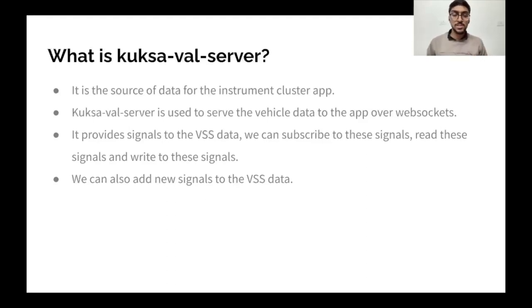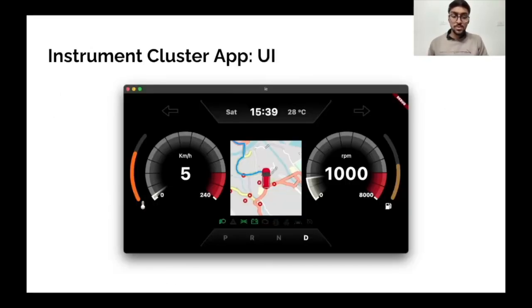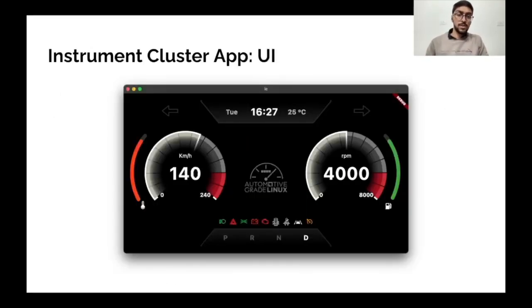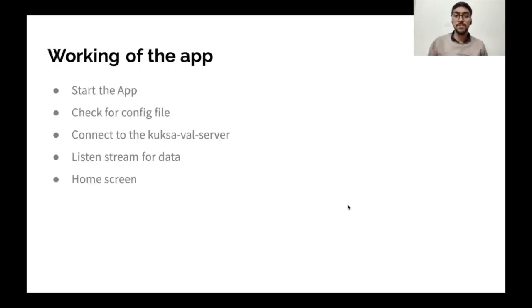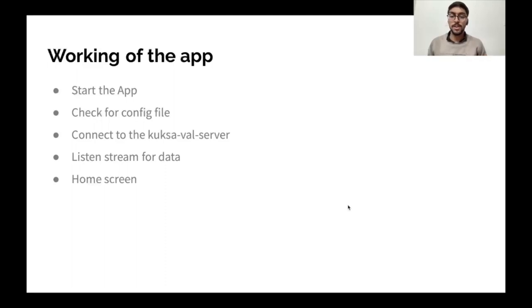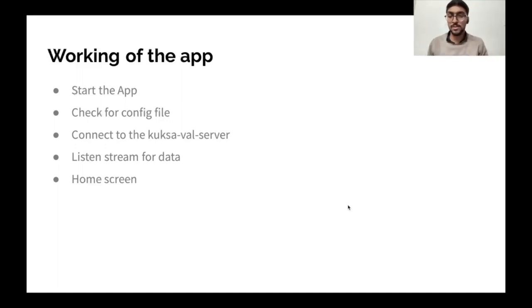For this application we have added some custom signals — one of these is used to enable the map, allowing navigation from the main screen to the map screen via a steering wheel switch. We connect to the KUKSA server using WebSockets, listen for data in the data stream, parse the data as it arrives, update the values, and then render the home screen.